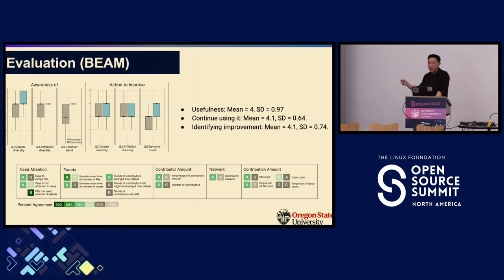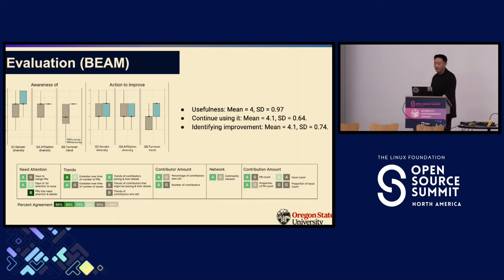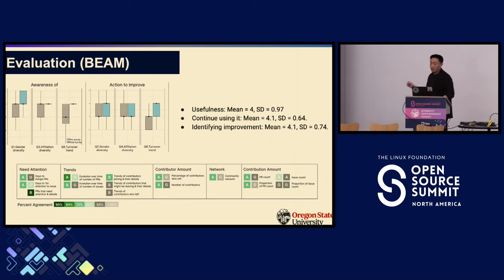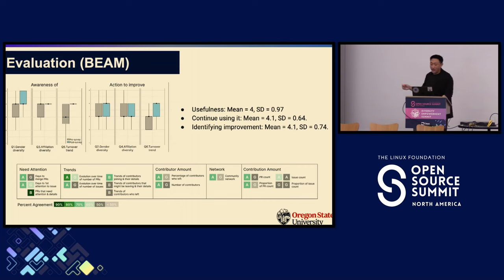A means affiliation, G means gender, B means both. One standout set we identified was labeled 'need attention.' This set is particularly interesting because it includes critical metrics such as days to merge pull requests, days to first attention to issues, and pull requests that require attention. For example, over 90% of participants expressed a likelihood of using the data on pull requests that did not receive any comments.